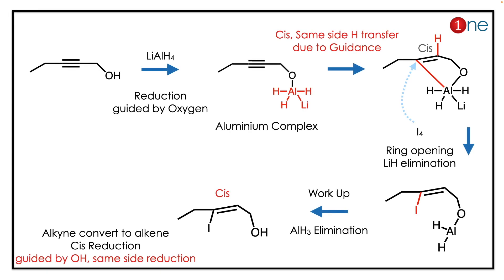In the selective and guided reduction: the first step — lithium aluminum hydride reacts with the hydroxyl group, forming an O-aluminum bond. The aluminum then guides reduction of the alkyne at the same spatial location, so cis-reduction occurs. The ring opens and iodine attacks from the opposite side, giving cis-vinyl iodide formation with iodine.